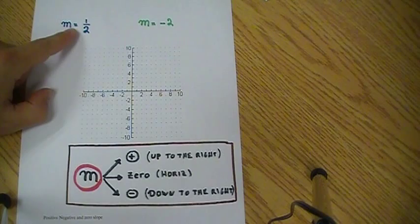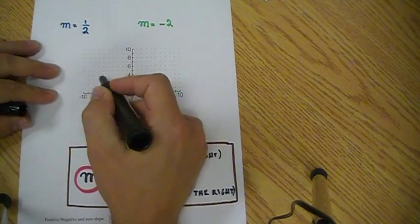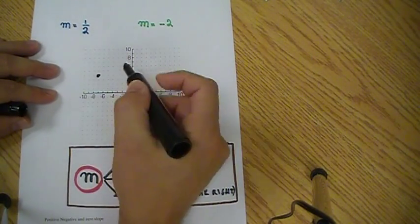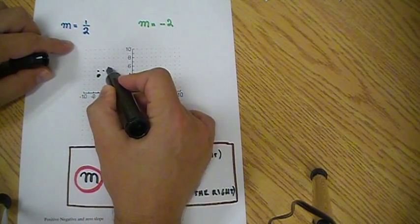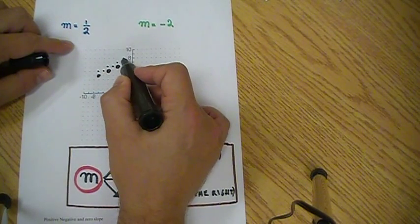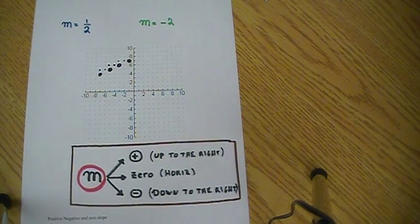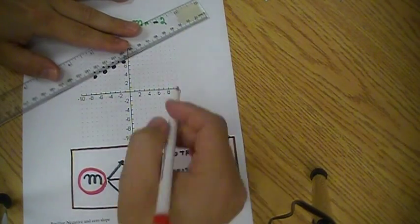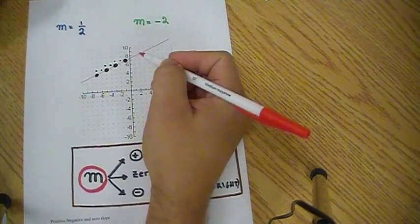A slope of one half means we're going to go up one and over two. I'll start right here. If I go up one and over two, there's my point. Up one and over two, there's my next point. Up one and over two, there's my next point. And then we can use a ruler to put this together. Once I have enough points, I can follow the pattern and then draw this straight line.